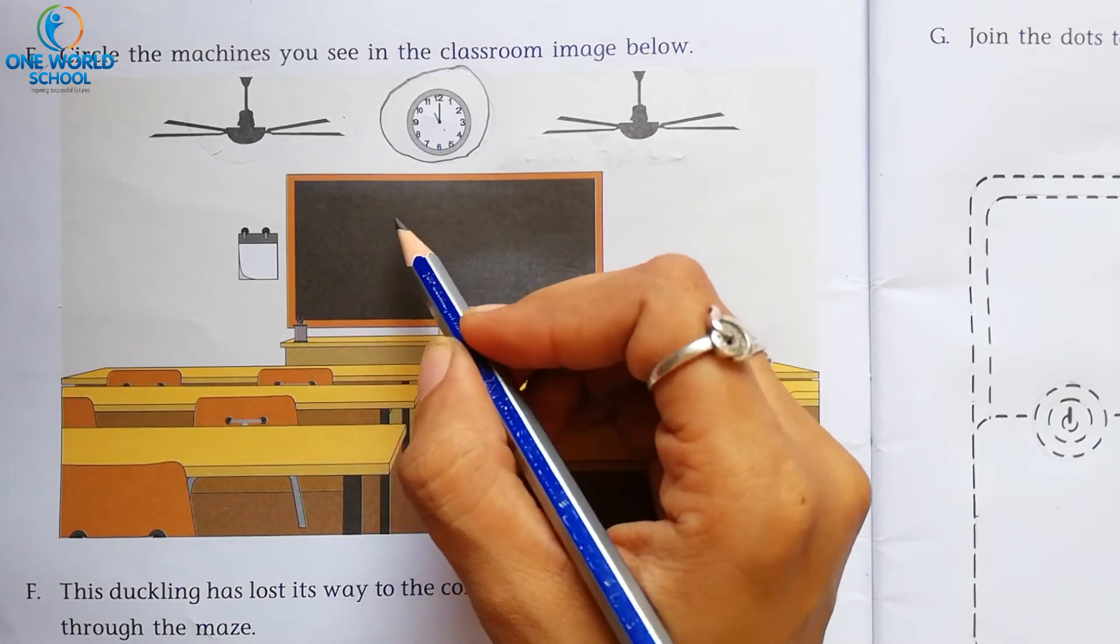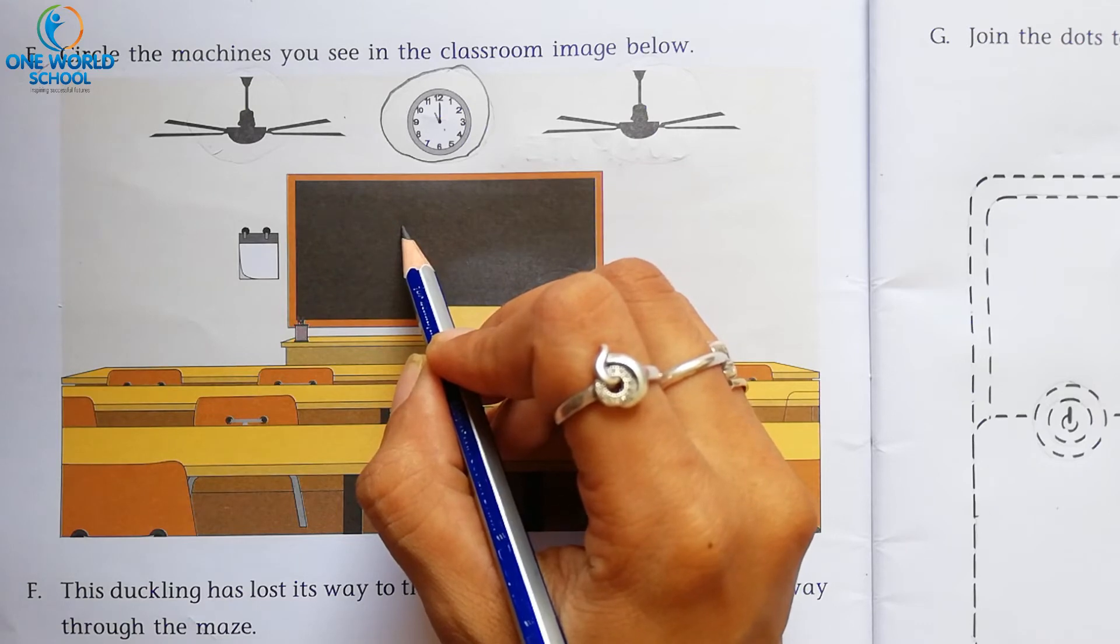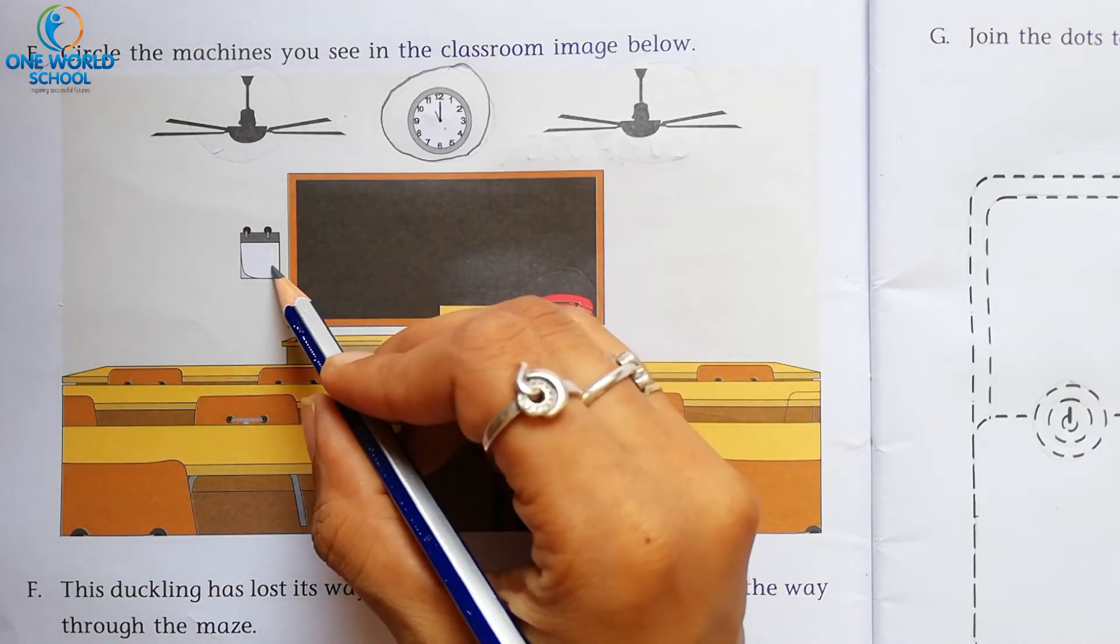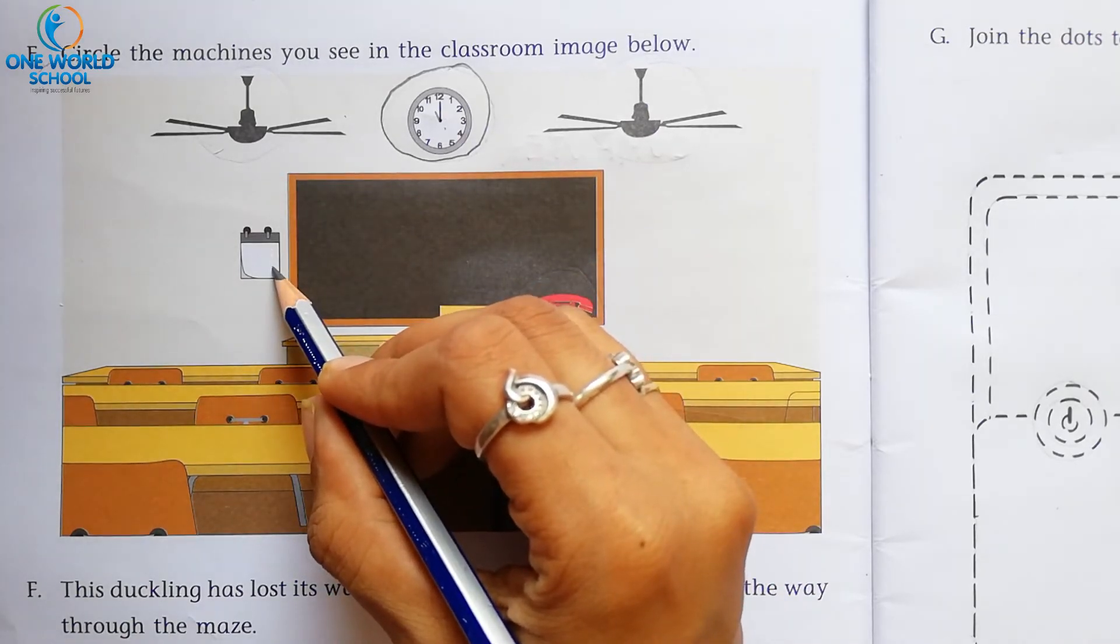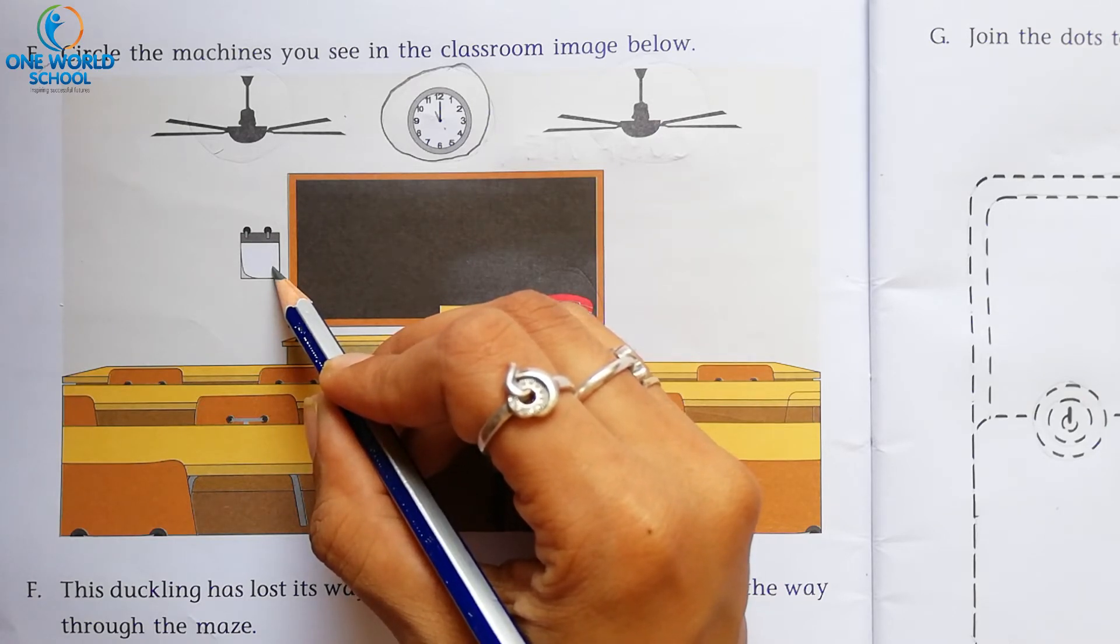Number two. Blackboard. Blackboard machine is not. No. So, we have to circle it. Number three. What is this? This is about the information of date. Here is calendar. Calendar machine is not. So, we don't have to circle on it.